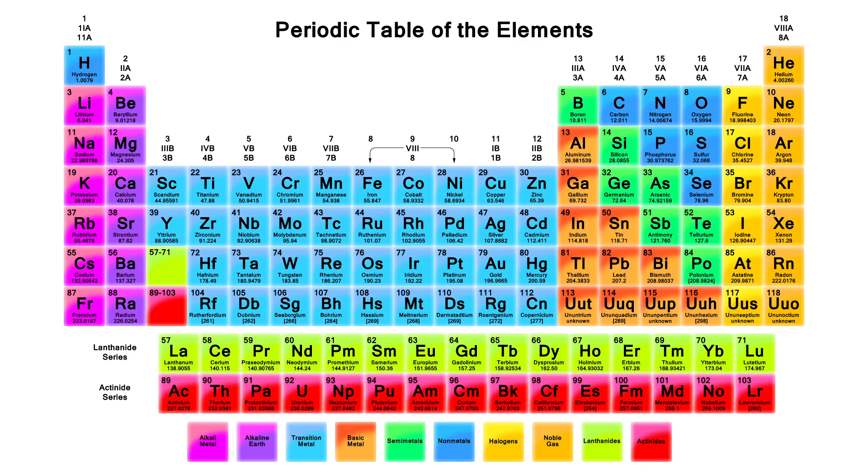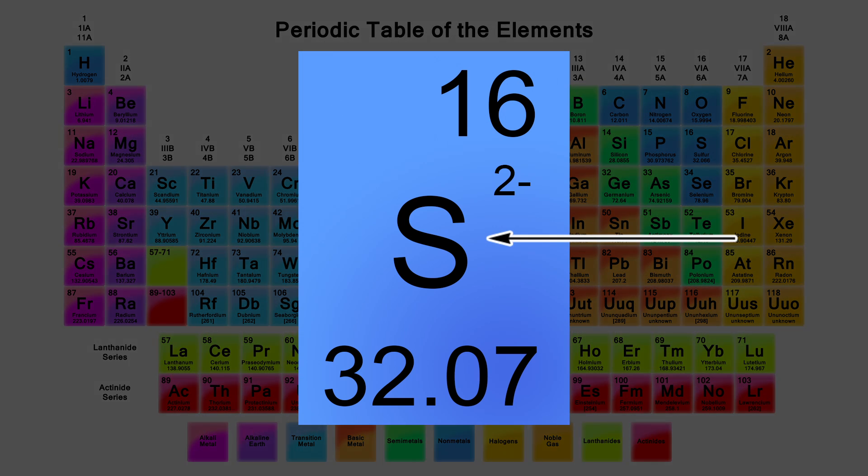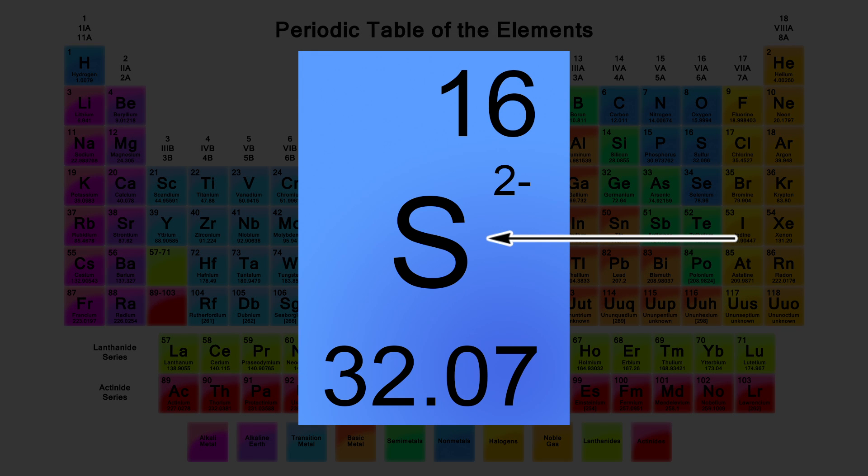How to Read a Symbol from the Periodic Table. In the element symbol for sulfur, the first thing we notice is the symbol itself, a big uppercase S.